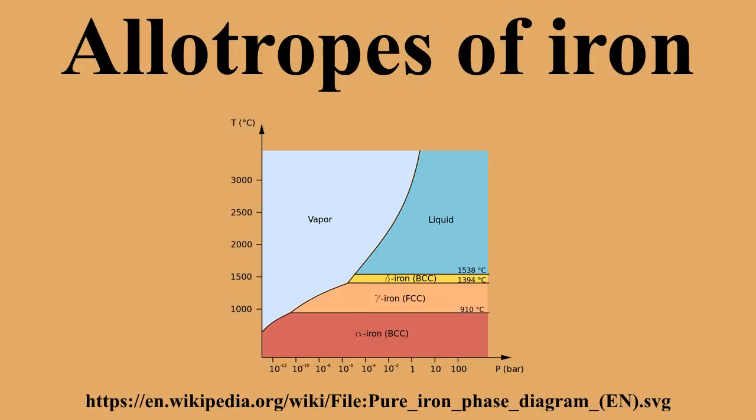Iron represents perhaps the best known example for allotropy in a metal. At atmospheric pressure, there are three allotropic forms of iron.